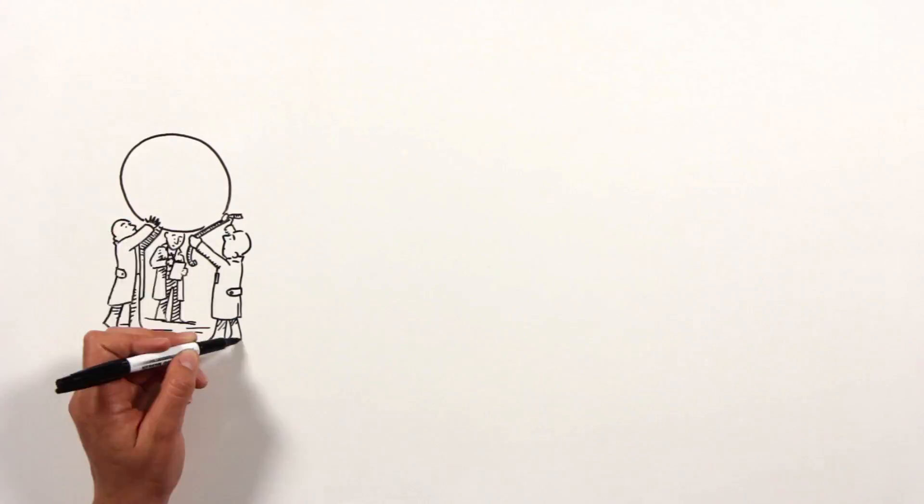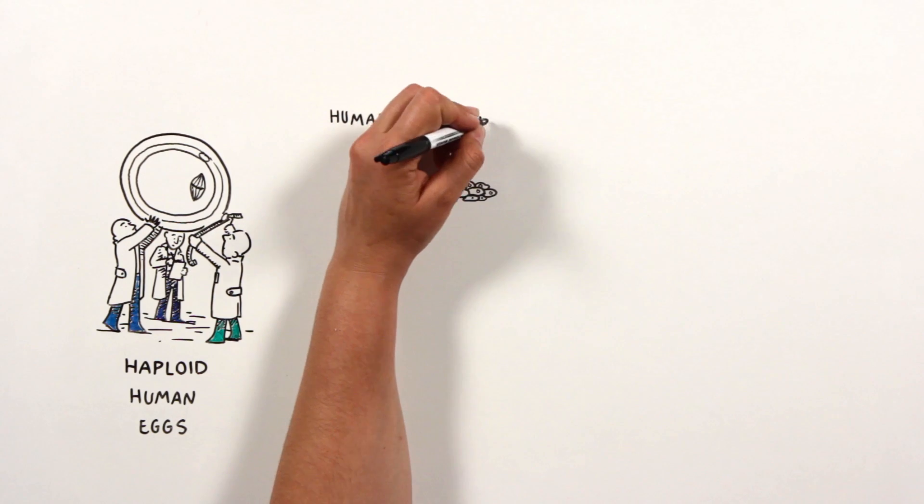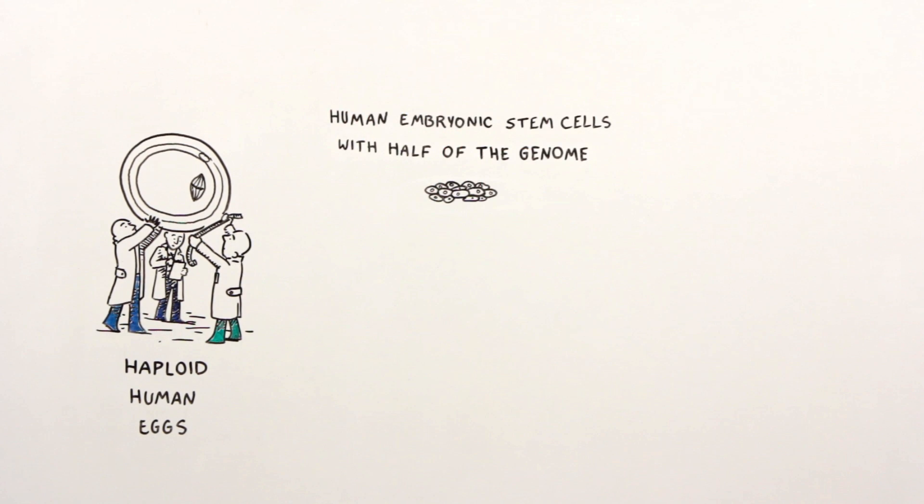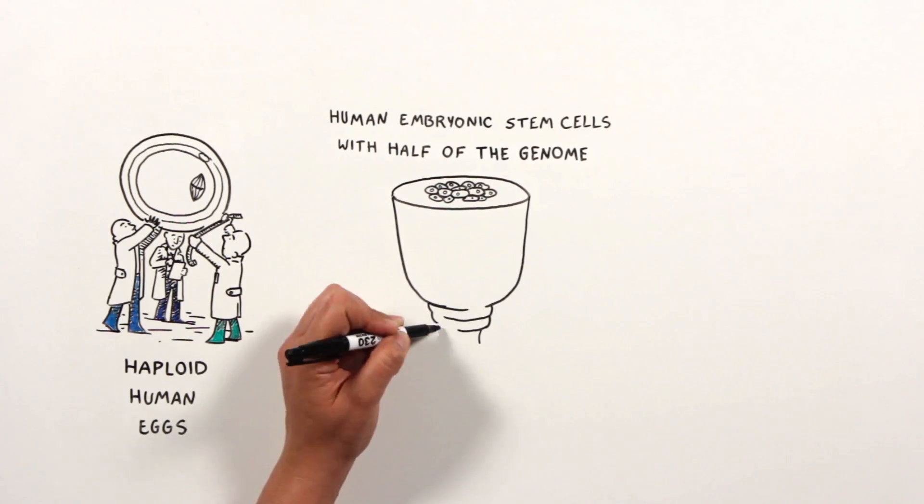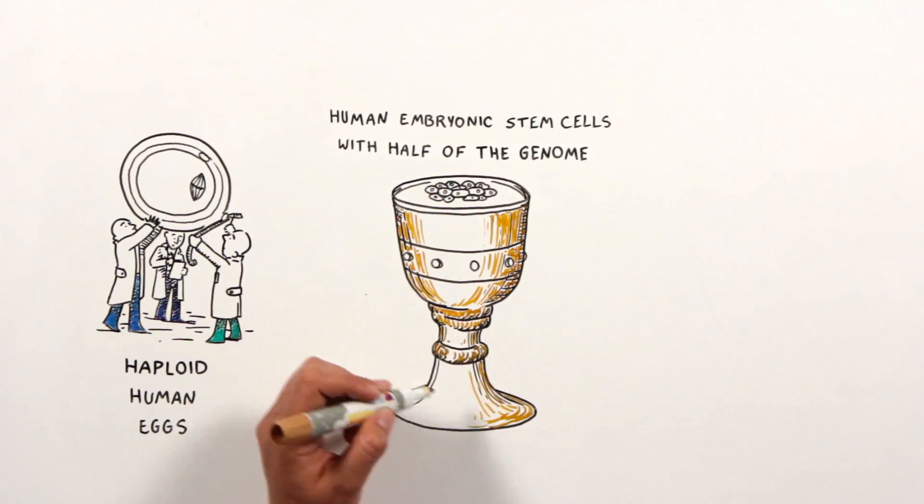The scientists were able to start with haploid human eggs and use them to generate human embryonic stem cells with half of the genome. Human embryonic stem cells are the holy grail of stem cells, as they can turn into any cell in our body.